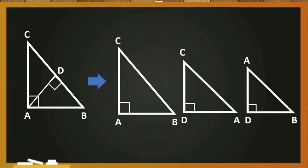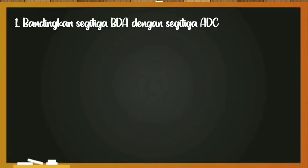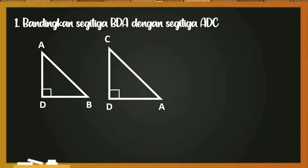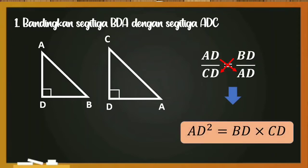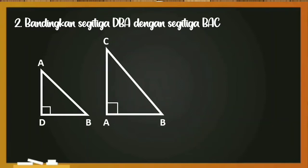Yang pertama, segitiga BAC, ADC, dan BDA. Kita akan membandingkan segitiga siku-siku yang ada. Yang pertama, kita akan membandingkan segitiga BDA dengan segitiga ADC. Dari segitiga yang ada, maka didapat perbandingannya. Untuk sisi-sisi yang bersesuaian, AD per CD sama dengan BD per AD. Ketika kita kali silang, maka didapatkan AD kuadrat sama dengan BD dikali CD.